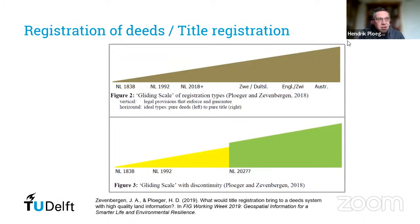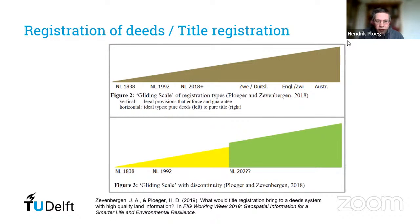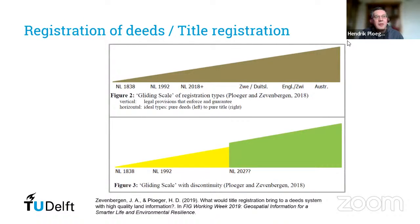This relates to the paper I've written — a model, a gliding scale, showing movement from very simple registration of deeds toward the most sophisticated registration of title. We consider Australia, with the Torrens system, to be the most sophisticated registration of title offering the most guarantees. Even within Australia, all states have registration of title, but they all differ a bit in how it is exactly formalized — one state will offer more guarantees than another.